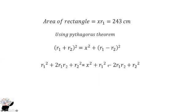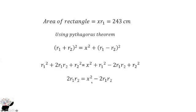We can see that r2² appears on both sides and r1² appears on both sides, so we subtract r1² and r2² from both sides of the equation. We are left with 2r1r2 = x² − 2r1r2.